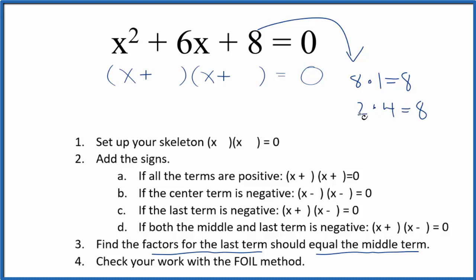So when we look at these, 2 plus 4 equals the 6 there. So we can just put 2 here and 4 here, and we should be done. We factored the equation x squared plus 6x plus 8.